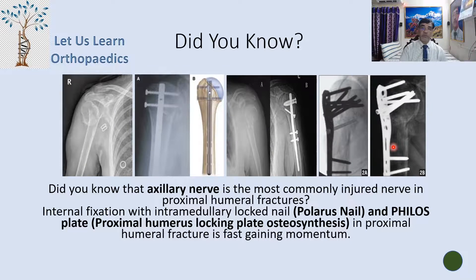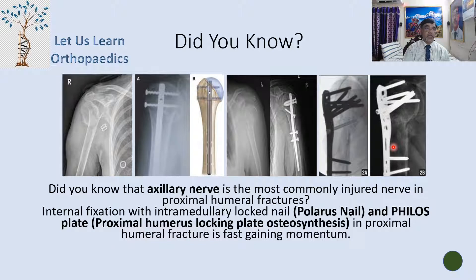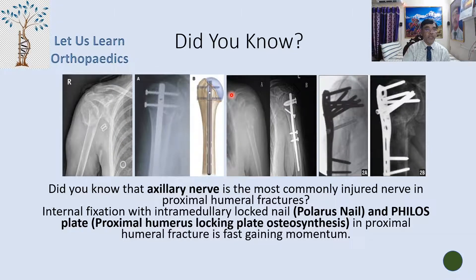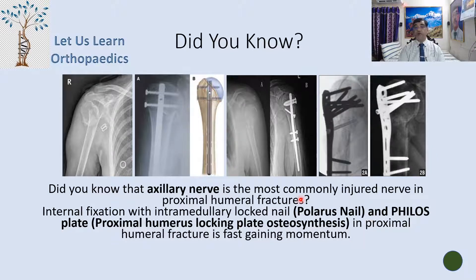The axillary nerve is the most commonly injured nerve in proximal humerus fractures. Internal fixation with intramedullary locking nail — such as the Polaris nail with multiple interlocking holes in multiple directions — is used. The PHILOS plate (proximal humerus locking plate osteosynthesis) is also fast gaining prominence. This concludes the discussion on fractures of the proximal end of the humerus.